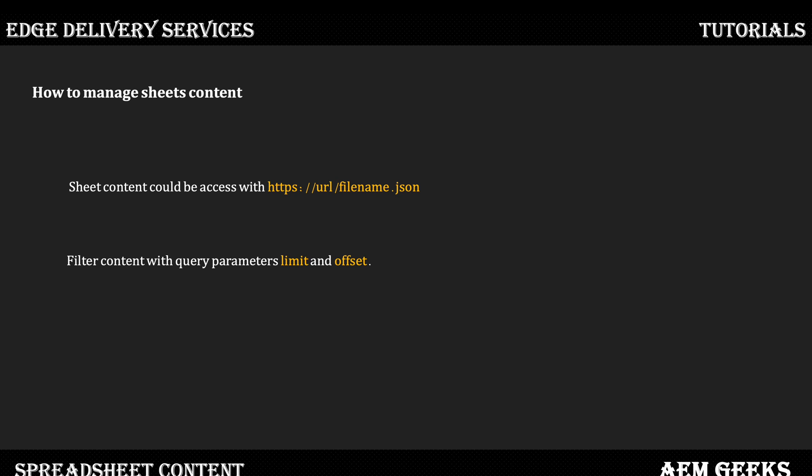If you have a single sheet, you can access that content using the URL with the filename followed by .json. The entire content is then available in JSON format. You can use query parameters — limit and offset — to implement pagination or to access specific data.